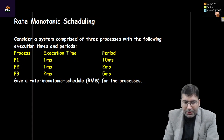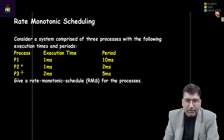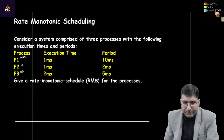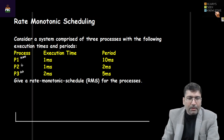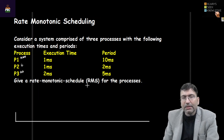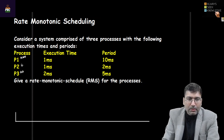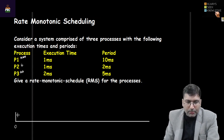A process with the least period gets the highest priority. Based on the given periods, P2 will get the highest priority because its period is 2 milliseconds — the smallest. The next priority goes to P3, and the least priority is given to P1. Now let's prepare our schedule. We consider that initially every process has arrived at time zero, so every process is in the ready queue.